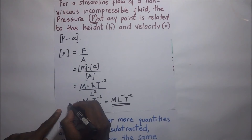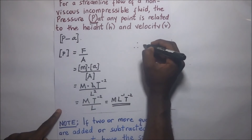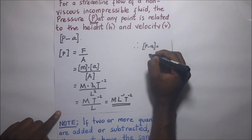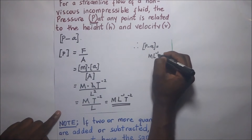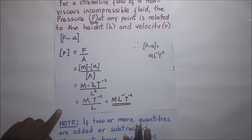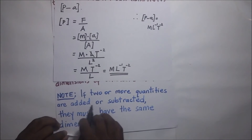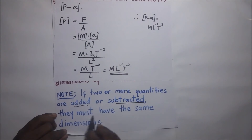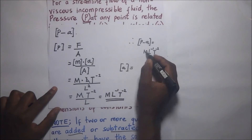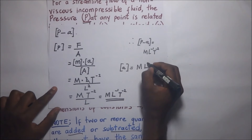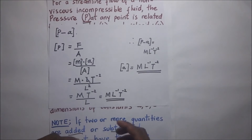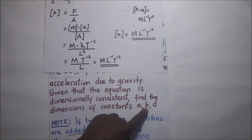Since these are the dimensions of pressure, the dimensions of P minus A are ML⁻¹T⁻². Because P and A are being subtracted and must share the same dimensions, the dimensions of A are also M L to the power negative 1 T to the power negative 2. Those are the dimensions of A.